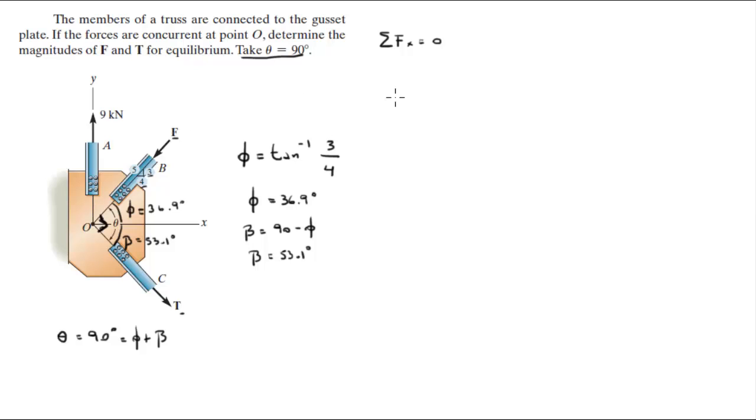So F is going towards the left. So negative F cosine of 36.9 degrees plus T, because T is going towards the right, cosine of 53.1 degrees is equal to 0. So that means that this is 0.6 T and this is negative 0.8 F.